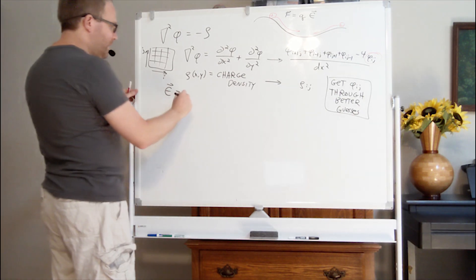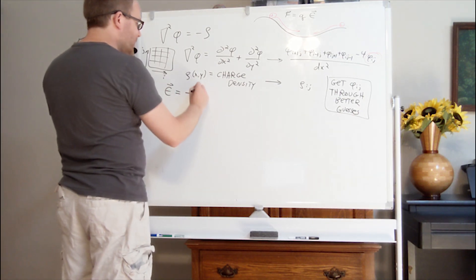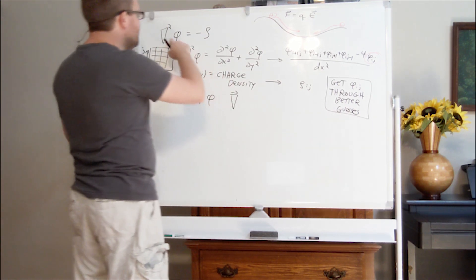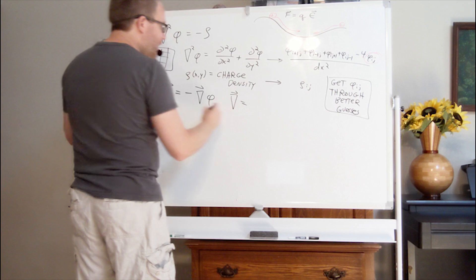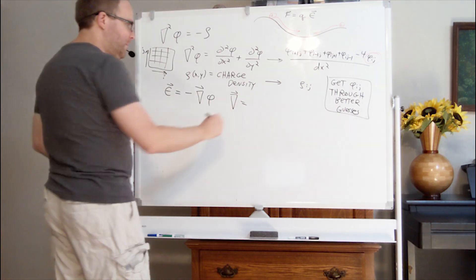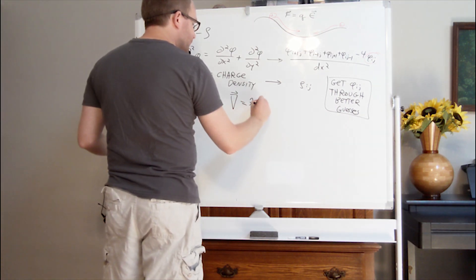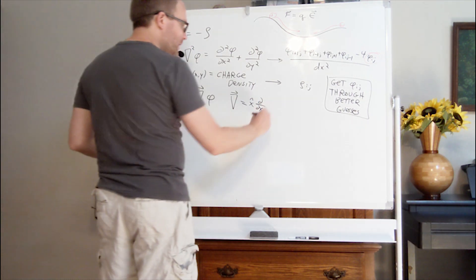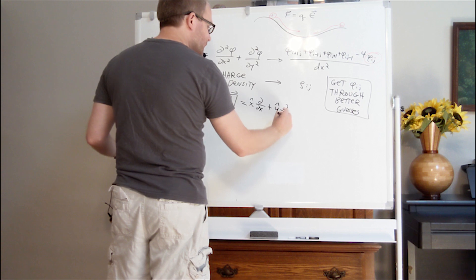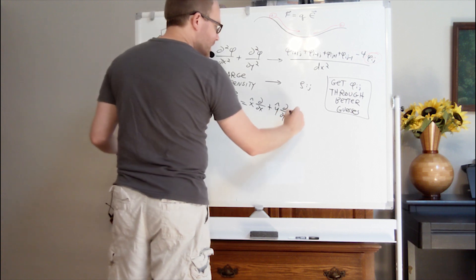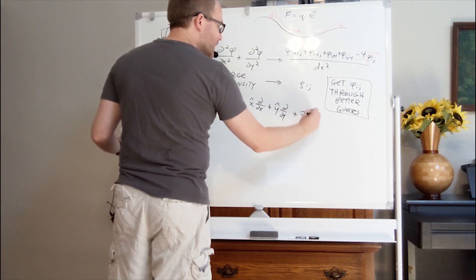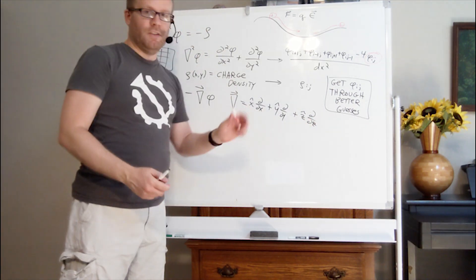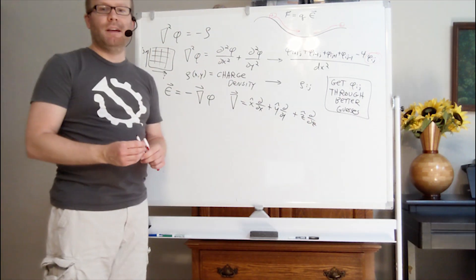The way this works is a pretty straightforward mathematical construction: we take the negative gradient of phi. Del here — not del squared anymore, but del the vector — is the gradient you're familiar with. It has an x component of a derivative in the x direction and a y component of a derivative in the y direction. If you wanted to do this in three dimensions, you would just add z-hat d/dz. But we're going to stick with two dimensions for now to keep things simple.